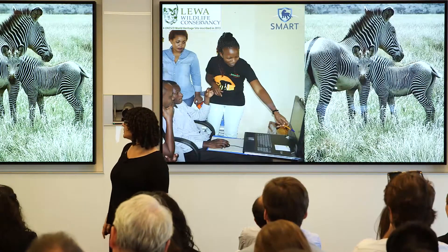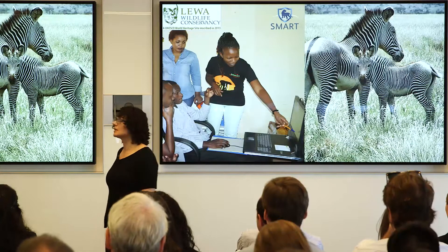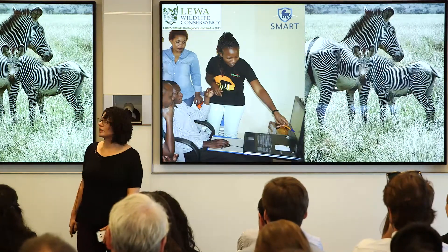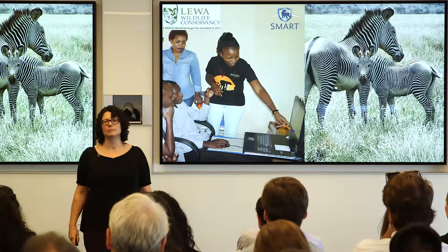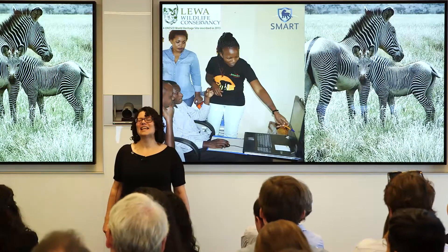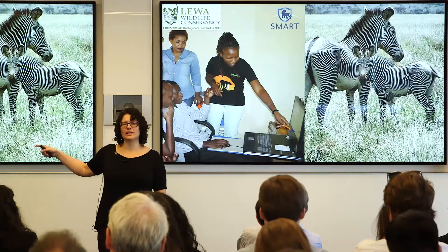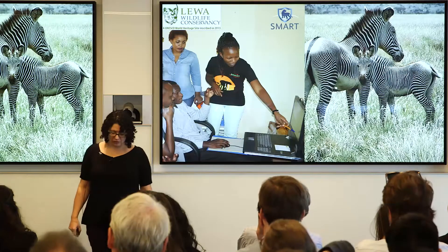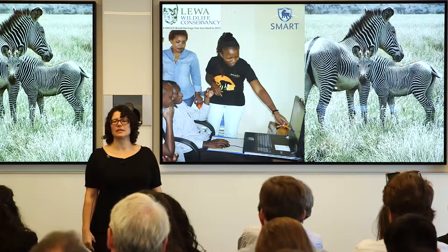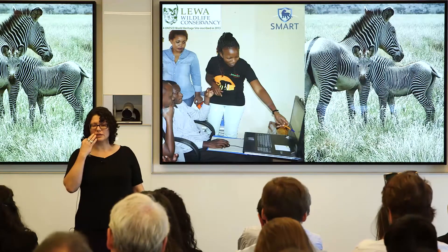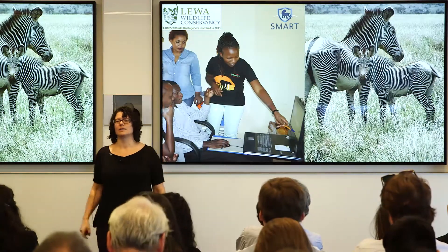Our first deployment was for Grevy's zebras in Laikipia Conservancy in Kenya and the headquarters of the Grevy's Zebra Conservation Trust. After using our system, they quickly realized that not enough juvenile zebras were surviving to adulthood, and the main culprit was lions. They'd done such a great job on lion conservation that there were too many lions. With the data and evidence from Wildbook, they were able to start a population management program with contraception for lions to keep the balance between predators and prey.